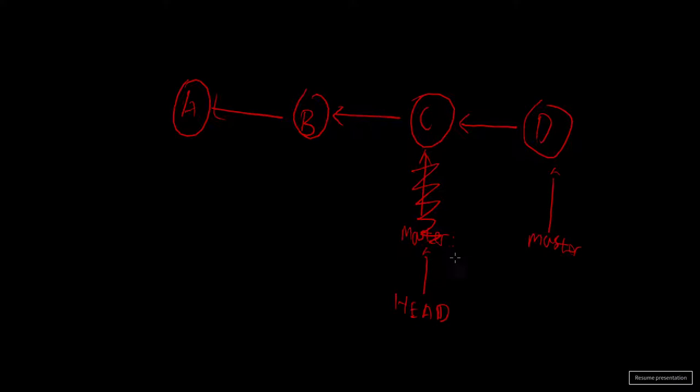A branch is just a name for a commit. When you move or reset a branch, you're just changing what that branch points to — the commits are still there in the graph and you can always go back. HEAD always points to the active branch. We'll see how this pointing is done in the git directory at the end.